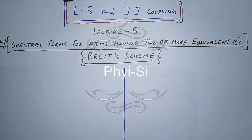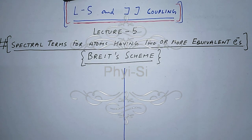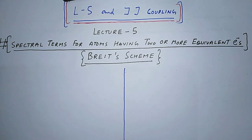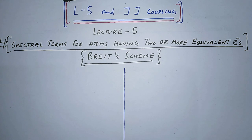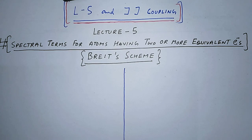Hello friends and welcome again to my channel 5Sight. This is lecture number 5 on LS and JJ Couplings. In this particular video we will try to find the spectral terms for atoms which have two or more equivalent electrons. We are going to find the spectral terms for equivalent electrons using a different approach called the Breit scheme.